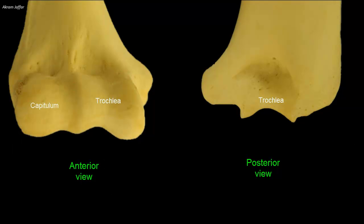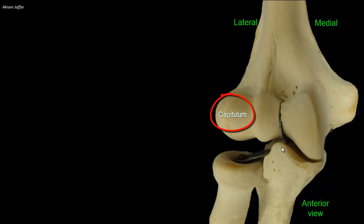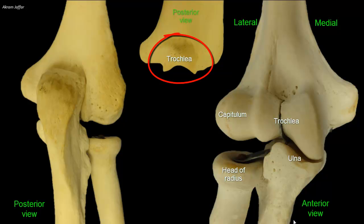The distal end of the humerus, including the trochlea, capitulum, olecranon, coronoid, and radial fossae, makes up the condyle of the humerus. The condyle has two articular surfaces: a lateral capitulum, meaning little head, which is a section of a sphere for articulation with the head of the radius, and medially the trochlea, meaning pulley, for articulation with the trochlear notch of the ulna. The trochlea can be seen on the anterior and posterior surfaces of the humerus, unlike the capitulum, which is only seen anteriorly.